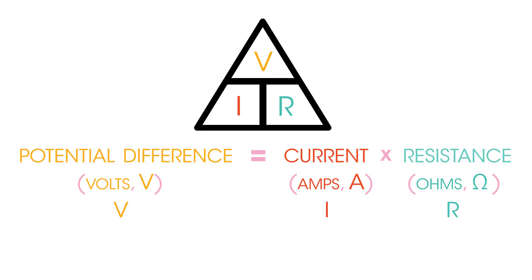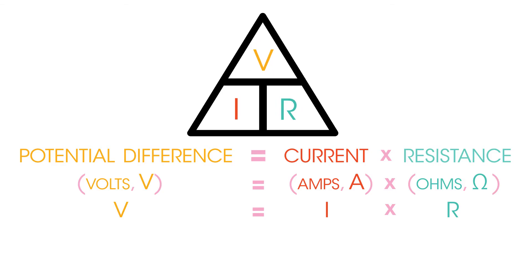These three things are linked together in an equation which states that the voltage is equal to the resistance multiplied by the current, or simply V equals I times R. This equation can be rearranged in a number of ways and is best represented by the triangle.